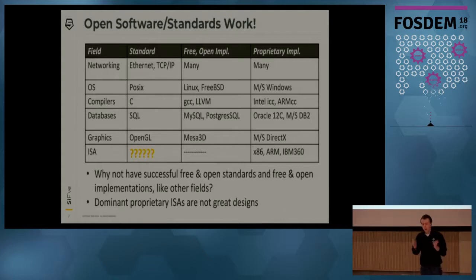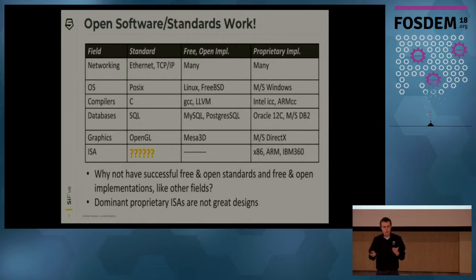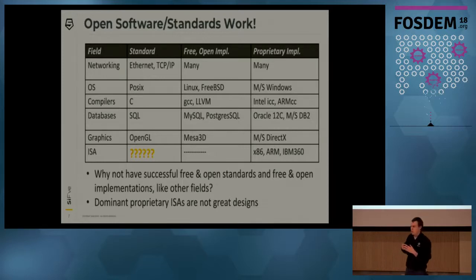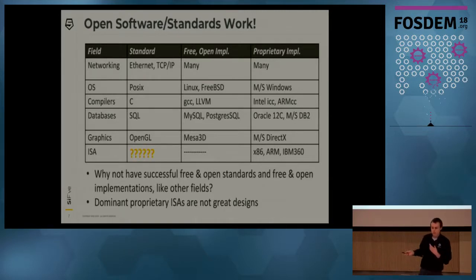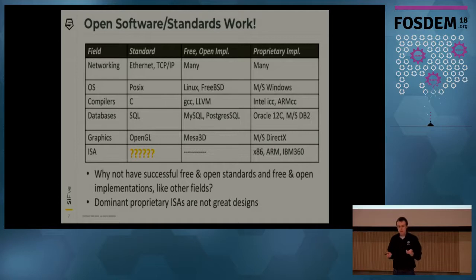Free and open standards have worked well all across the software stack. A great example is in networking: Ethernet and TCP/IP have taken over the world. In operating systems, POSIX-compliant systems are everywhere. In graphics, OpenGL is a great example. You can run your 3D applications on systems from multiple vendors, and they're largely portable. So why is there no free and open ISA standard?